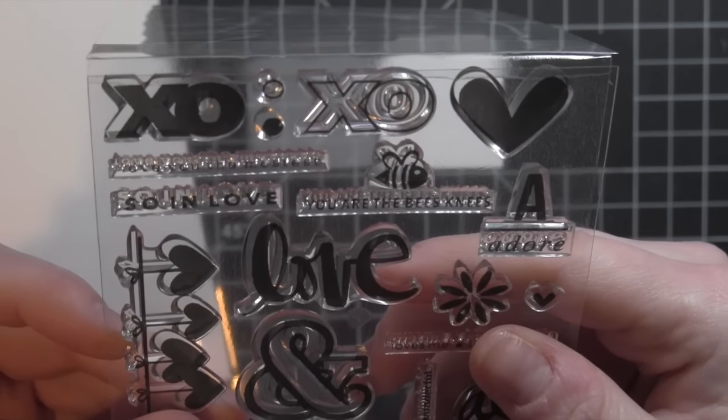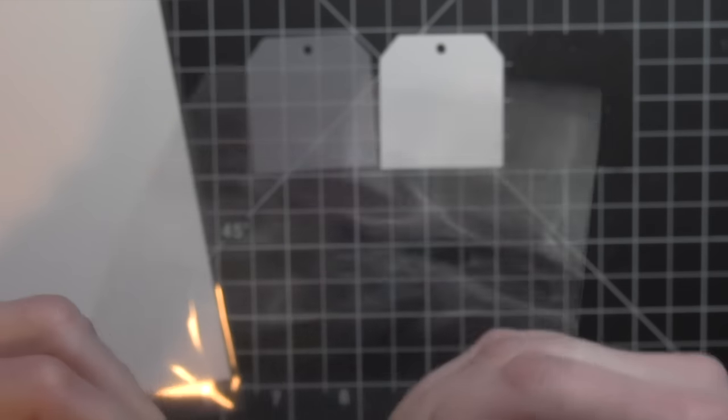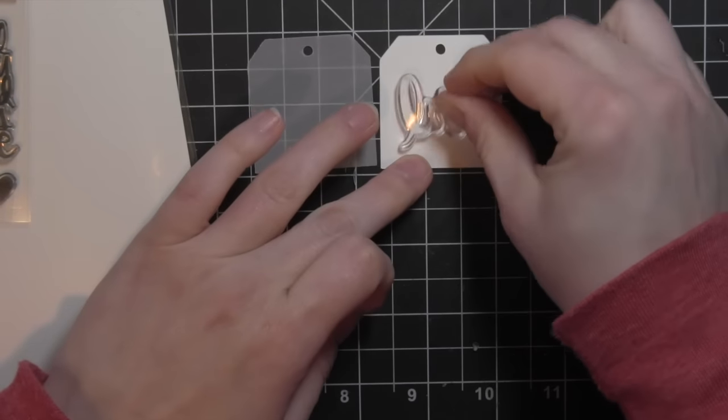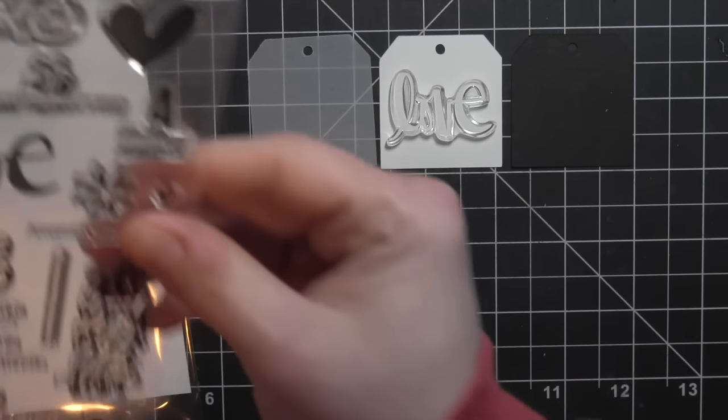So I cut the bottom of the box from one piece of 8.5 by 11 inch cardstock and the top of the box from another piece of 8.5 by 11 inch cardstock. Then I die-cut the tags using vellum, white cardstock, and black cardstock.